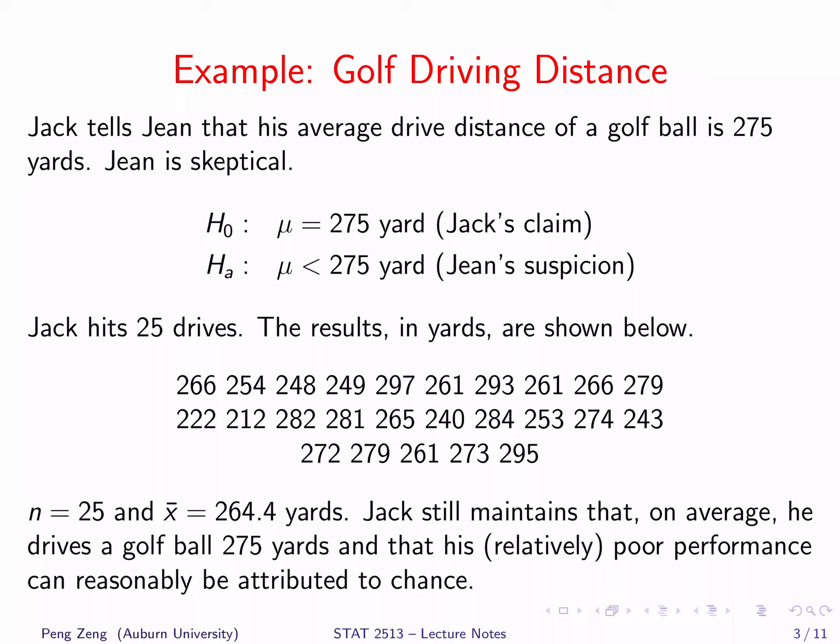Jack tells Jane that his average driving distance of a golf ball is 275 yards. Jane does not believe it. It is a hypothesis testing problem. The null hypothesis is mu equals 275 yards, which is Jack's claim. The alternative hypothesis is mu less than 275 yards, which is Jane's suspicion.